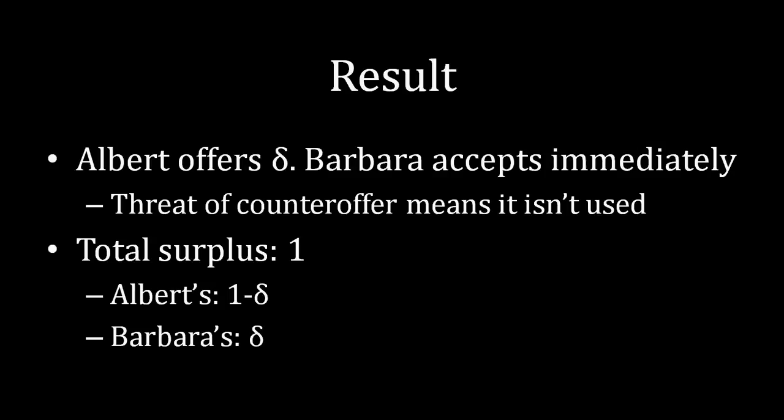Now notice, and we'll talk about this a little bit more later on, the exact division depends on the size of delta. If delta is very large, in other words, if it's not that costly for Barbara to reject an offer, then she will end up very well off, and Albert will not be very well off. And the same is true in reverse, where if Albert is looking at a discount factor that's very small, then he'll do very well for himself if we have this single counteroffer in the game that we analyzed here.